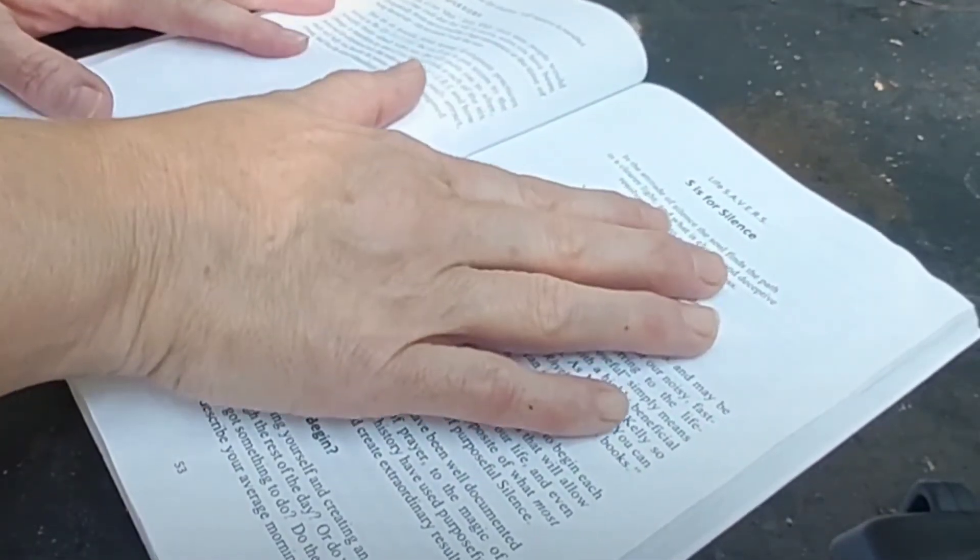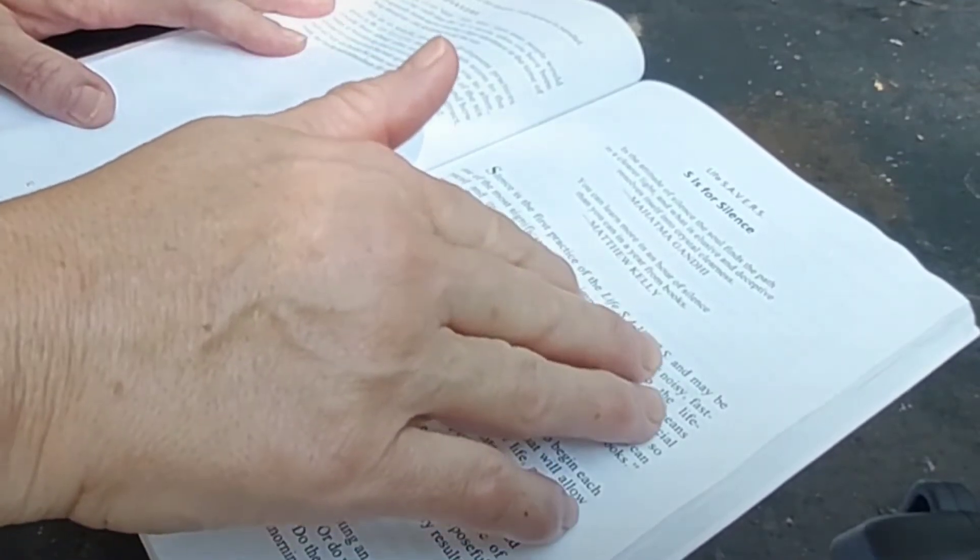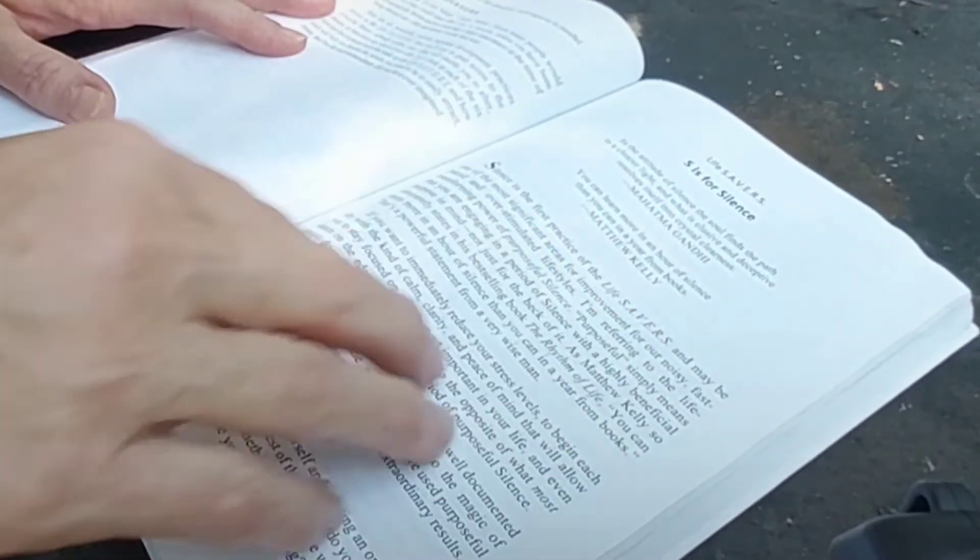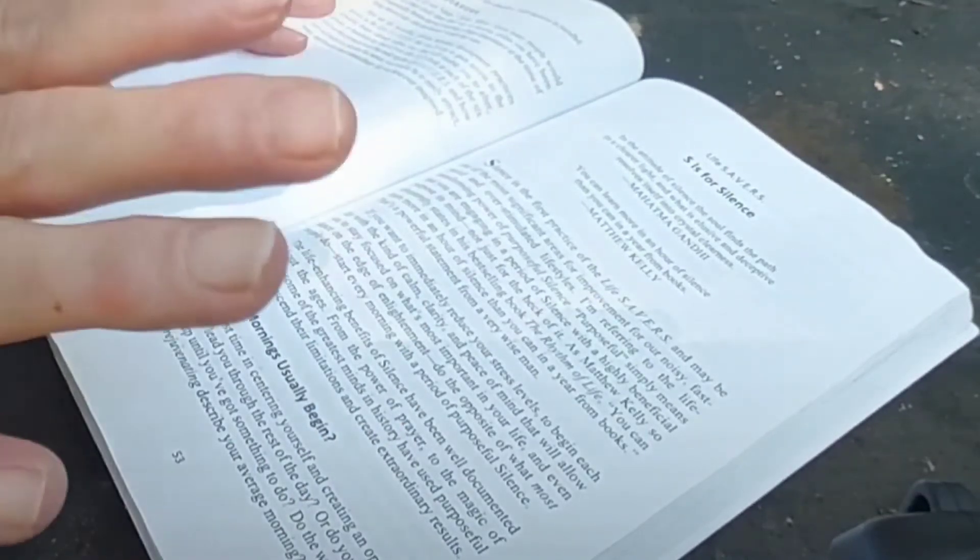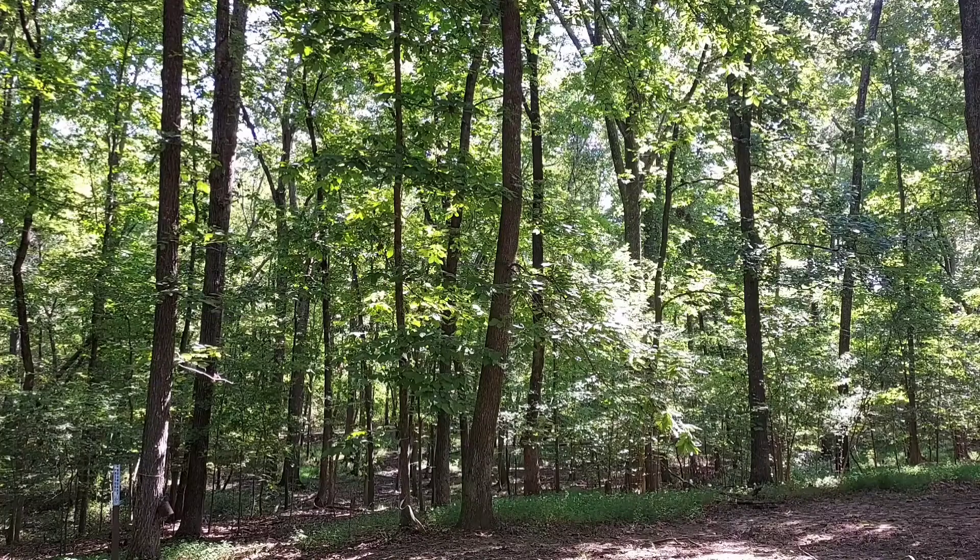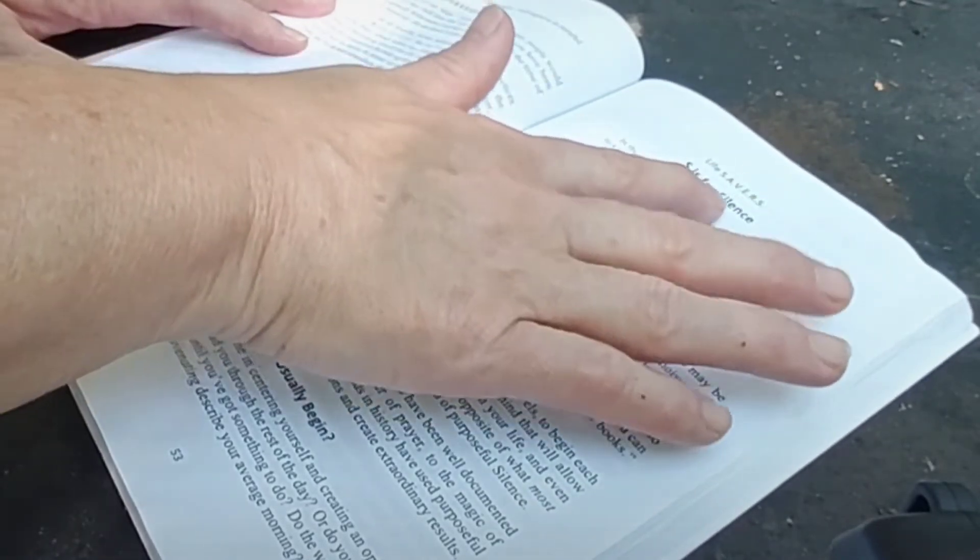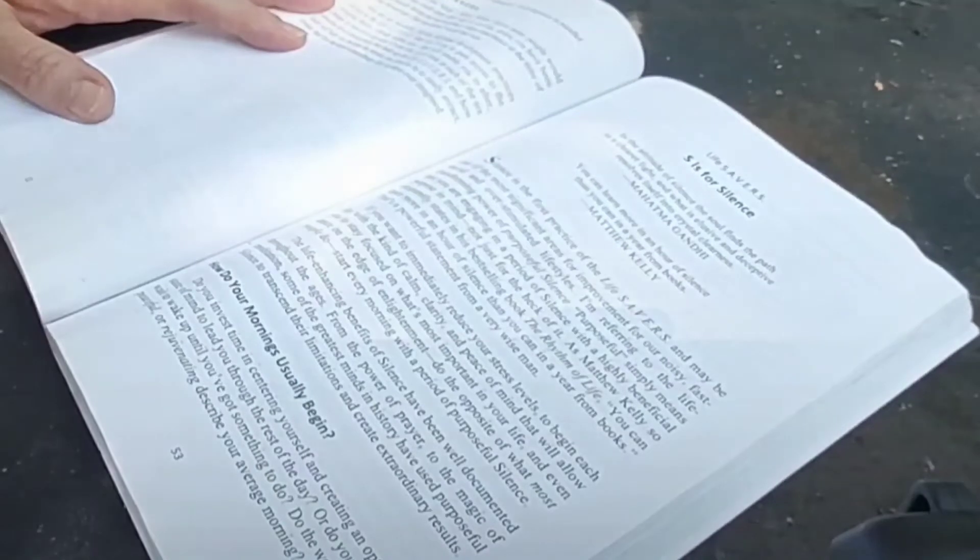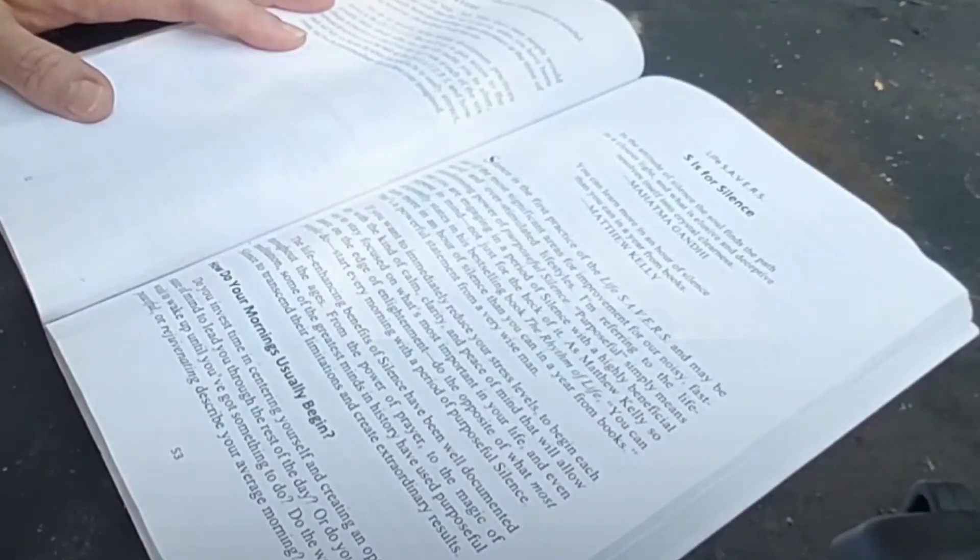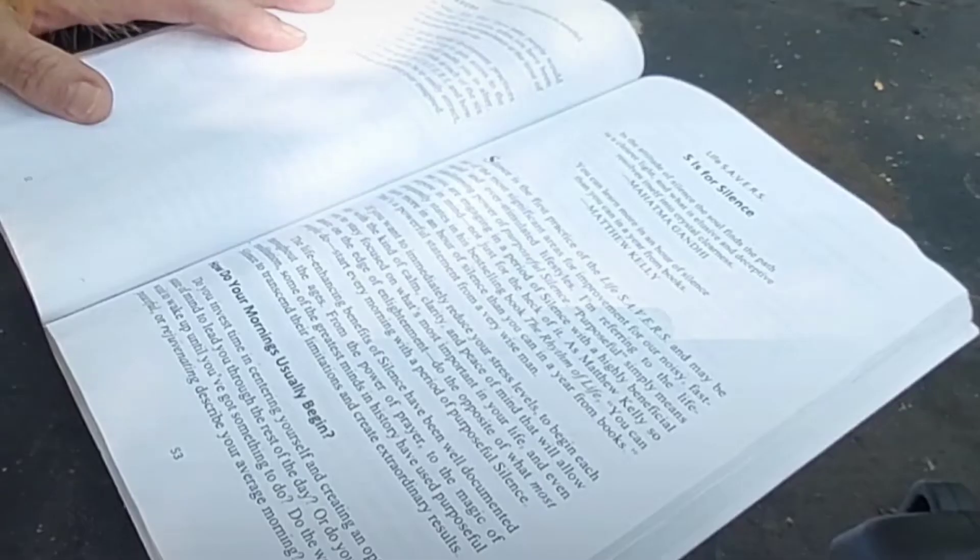The first of the lifesaver is S. It is not for sleep. Silence is the first practice of lifesavers and maybe one of the most significant areas for improvement for our noisy, fast-paced, and overstimulated lifestyles. Let's say that again. The lifesavers, the S, is for silence. In the midst of silence, the soul finds the path in a clear light, and what is elusive and deceptive resolves itself into crystal clearness. Mahatma Gandhi. Canon, a year from books. Matthew Kelly.